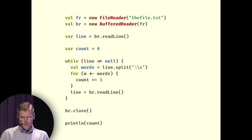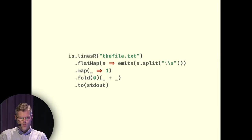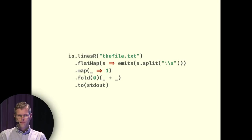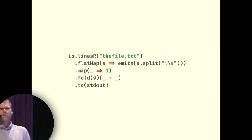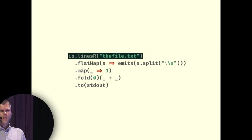I want to contrast this with a program that does exactly the same thing but in a compositional way. Here's a program that does the same thing but uses the FS2 library, which is designed to be compositional. This program is a lot shorter and the logic is very prominent. More than that, we can reason about it compositionally because each part is a meaningful expression. The first part here opens the file, emits the lines as a stream of strings, and then closes the file — that's a meaningful thing to do on its own.